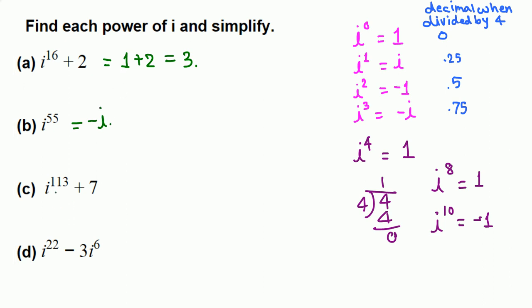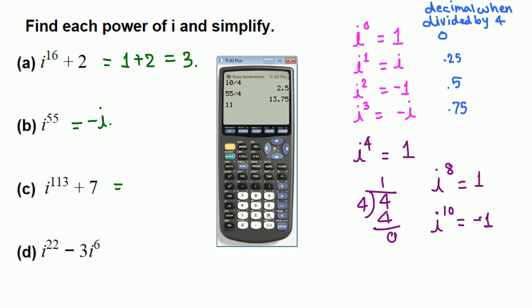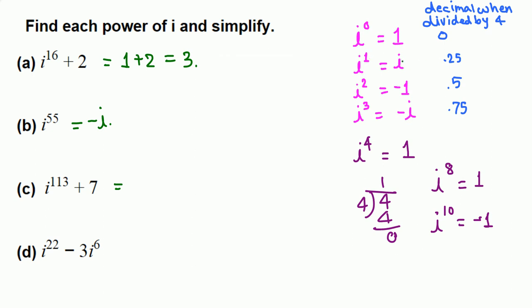Next, i raised to 113 plus 7. Divide 113 by 4. 113 divided by 4 we get 28.25. The 0.25 means remainder of 1, so i. This means i raised to 113 is just i. So i plus 7, and if you want to write in standard form, this is 7 plus i.